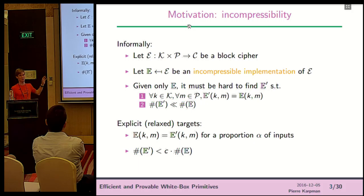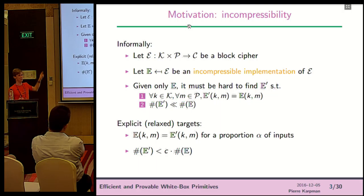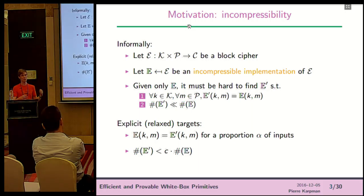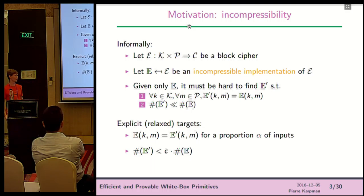We can define incompressibility in a rather intuitive way. Say we have a block cipher, taking a key and plaintext, sending a ciphertext, and we want an incompressible implementation VBE — just a program. What we want is that if given this implementation, it's hard to define another implementation E prime that gives the same answer for all inputs and outputs, and that this program is much shorter — the size of E prime is much smaller than the size of V.